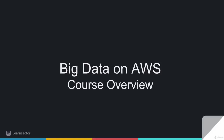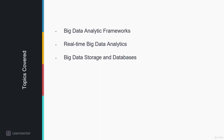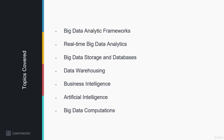To start with, we'll be talking about the overview — what is AWS and why we use AWS for big data. Then we'll talk about different services and solutions provided by AWS for big data, like big data analytical frameworks, real-time big data analytics options, big data storage and database solutions, data warehousing options, business intelligence, artificial intelligence, and big data computations available with AWS.